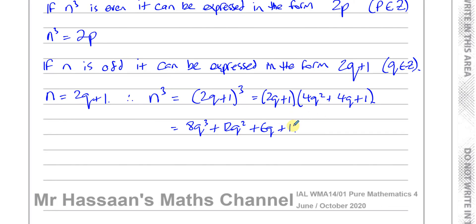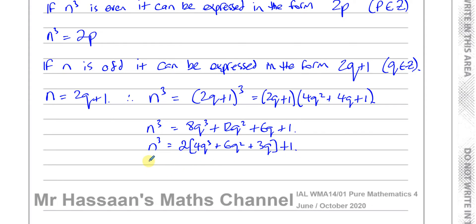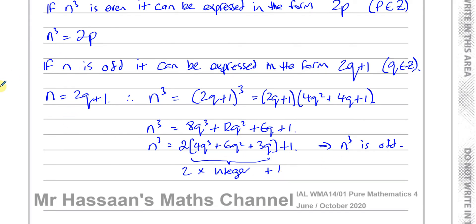So n cubed equals 8Q cubed plus 12Q squared plus 6Q plus 1. Taking out 2 as a common factor from the first three terms, since they are all even, we get n cubed equals 2(4Q cubed + 6Q squared + 3Q) plus 1. This shows that n cubed is odd, because we have 2 times an integer, plus 1.